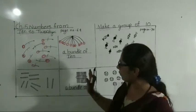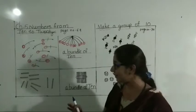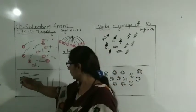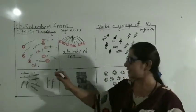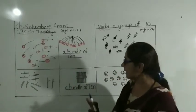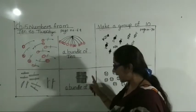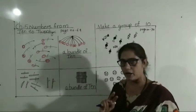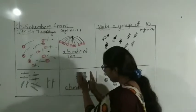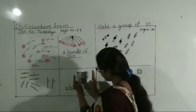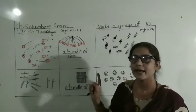Now next. See here, some sticks are there. How many sticks are there? Let's count: 1, 2, 3, 4, 5, 6, 7, 8, 9, 10. How many sticks are there? 10 sticks. Here, a bundle of 10.